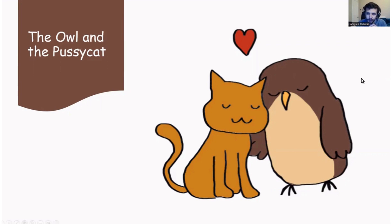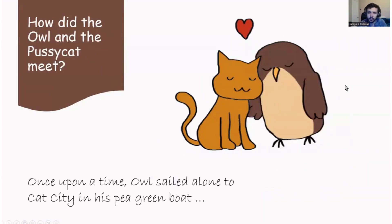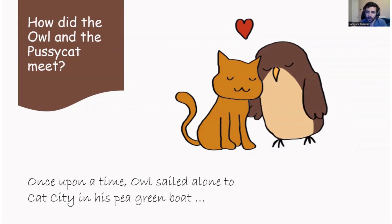Now, if you haven't read this story, I have it here. So if you like, you can pause the video now and read the story, otherwise you can continue watching. So we have our story here. The writing exercise today is about how The Owl and the Pussycat first met. The start of the story is: once upon a time, Owl sailed alone to Cat City in his pea green boat. Pause the video and write this line at the top of one sheet of paper.